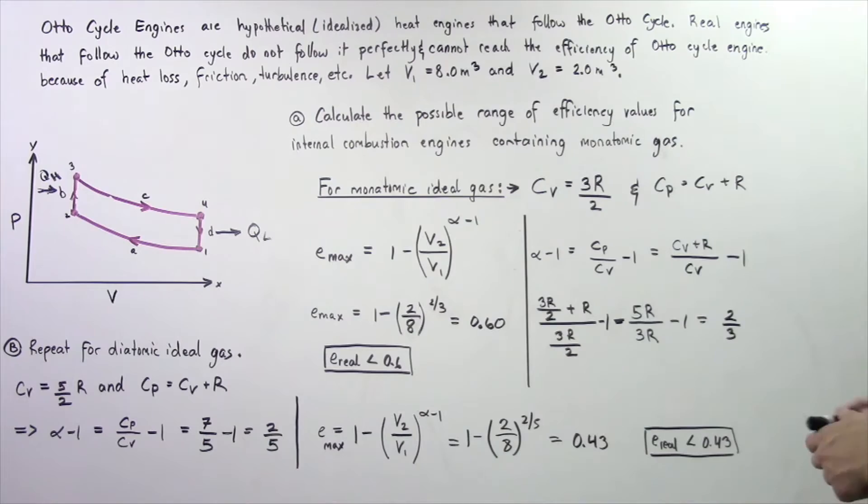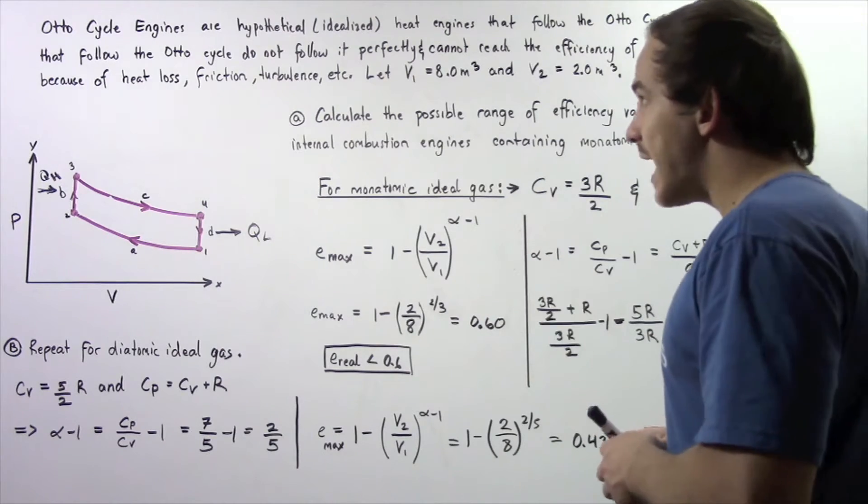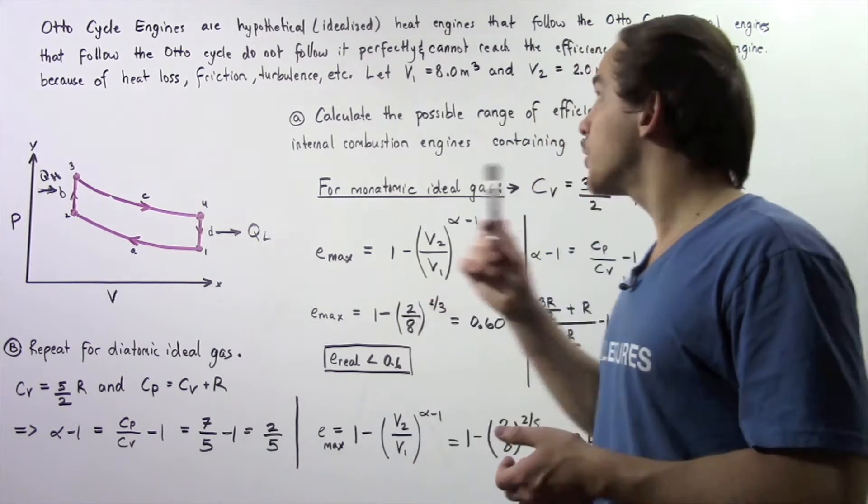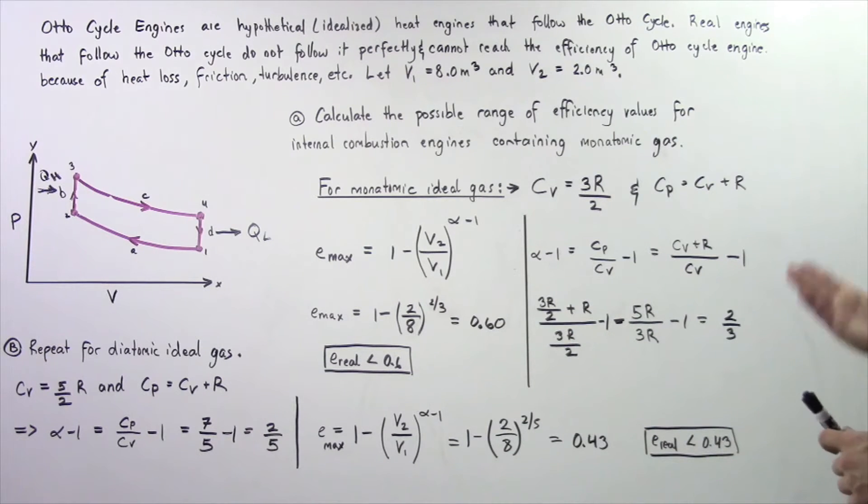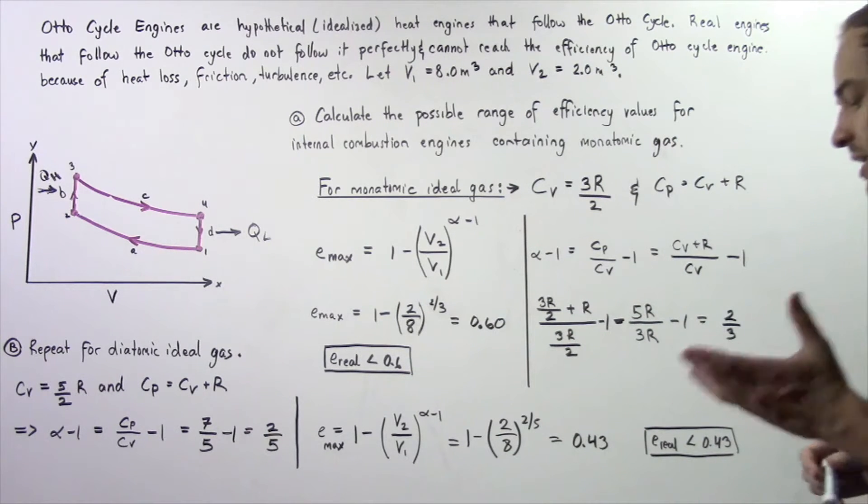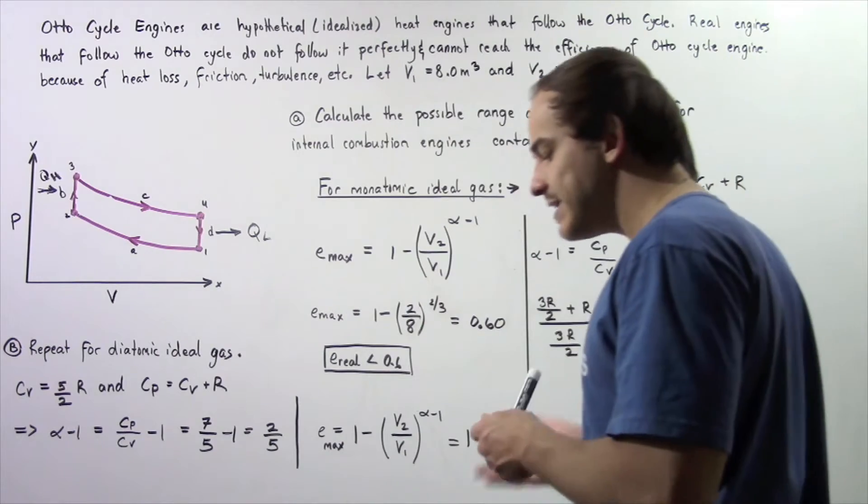Now real engines that follow the Otto cycle do not follow it perfectly and cannot reach the efficiency of the Otto cycle engine because of things like heat loss, turbulence and friction.